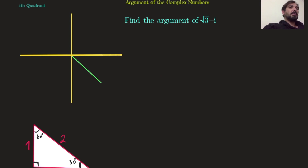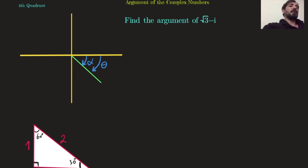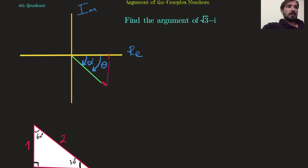Let's look at the last one in the fourth quadrant. Here the situation is straightforward because once I get alpha, it will also be my theta. The real part is √3 and the imaginary part is negative 1 — why negative 1? Because the coefficient of i is negative 1.